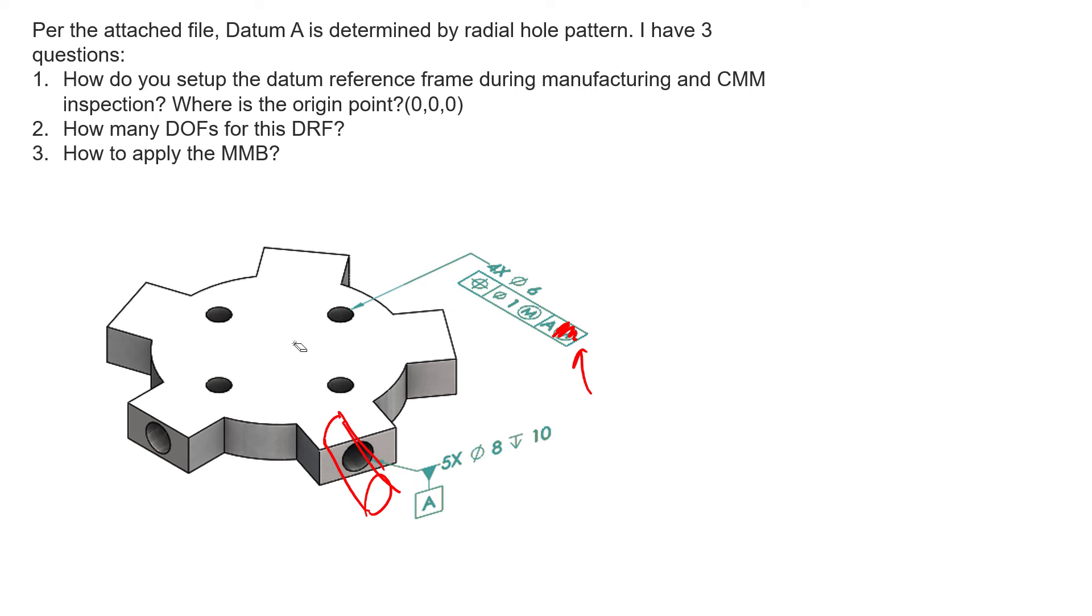It's going to expand all five of those cylinders—again, we're assuming MMB is closed out here—and it's going to give us a zero-zero-zero right in the middle. Now if we're going to assume the MMB is being applied, you apply the MMB right after the datum feature.